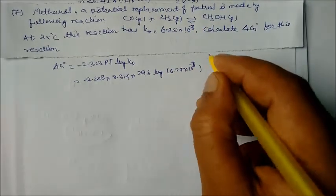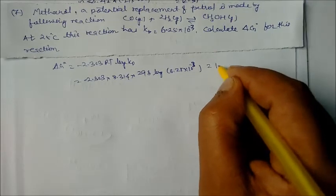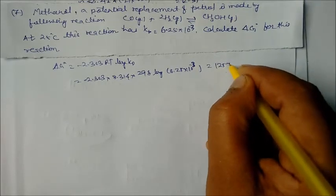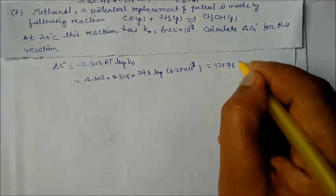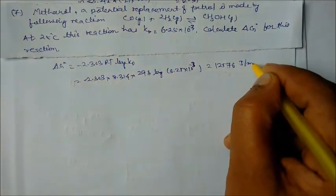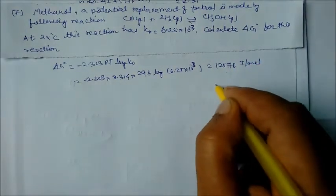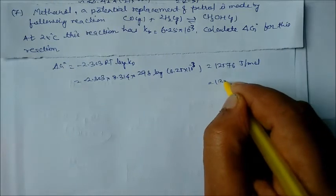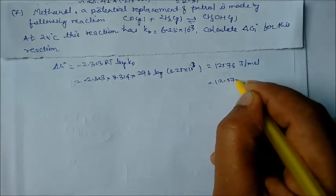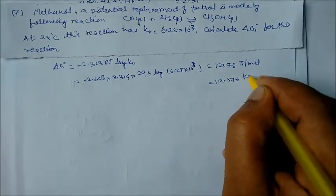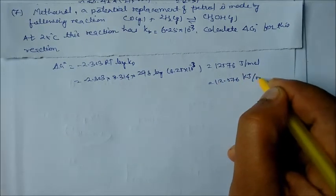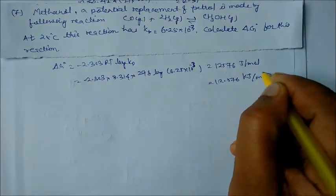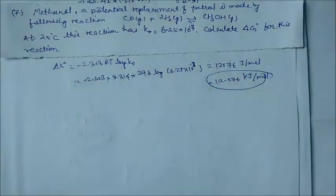Solving gives ΔG° = 12576 J/mol, or 12.576 kJ/mol. This is our answer.